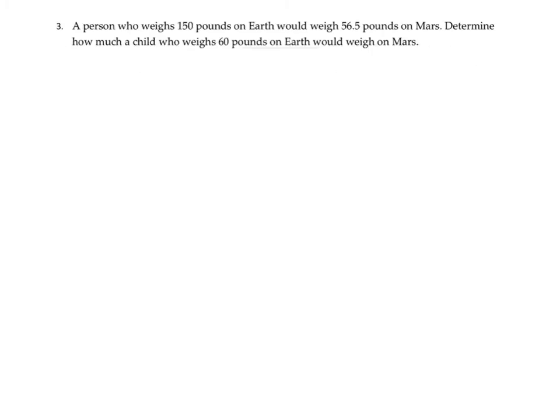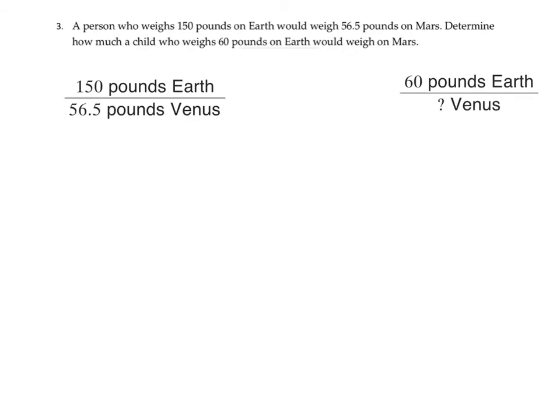Question three. A person who weighs 150 pounds on Earth would weigh 56.5 pounds on Mars. Determine how much a child who weighs 60 pounds on Earth would weigh on Mars. First, write proportions. I've set up the known ratio of 150 pounds on Earth over 56.5 pounds on Mars, equal to 60 pounds on Earth over the unknown. I cannot go straight from 150 to 60, so I'll simplify by dividing both by 5, giving me 30 over 11.3.